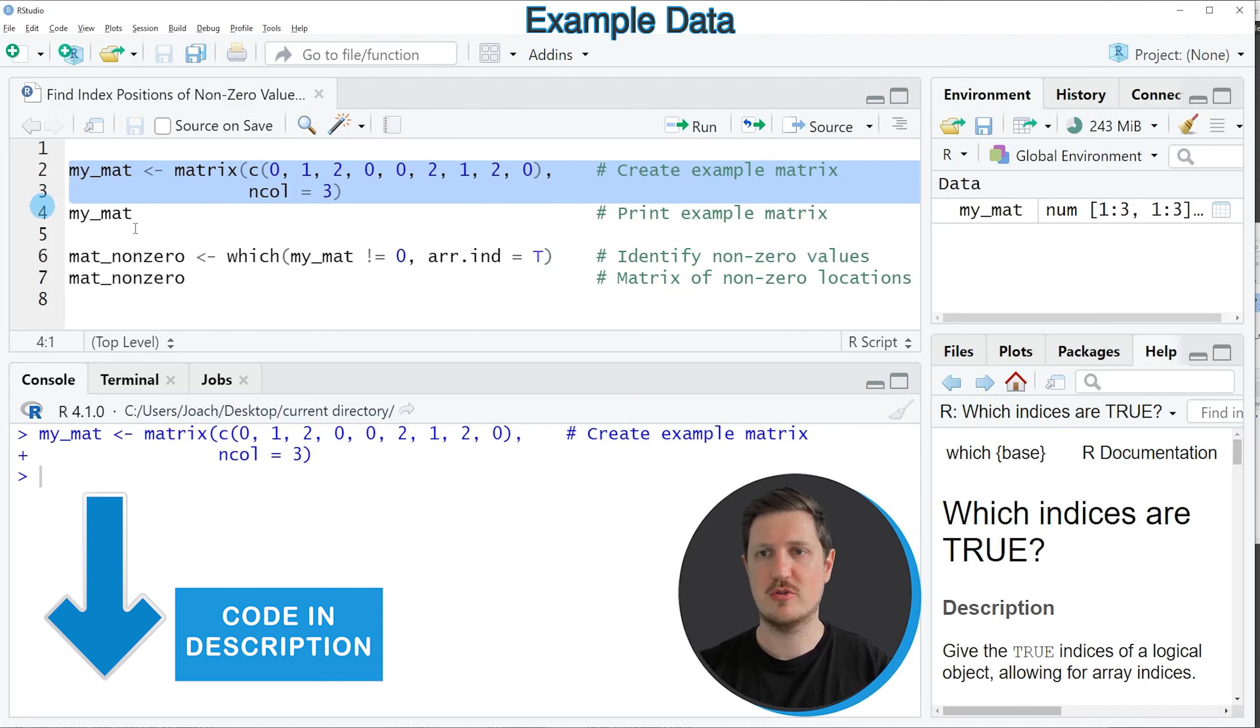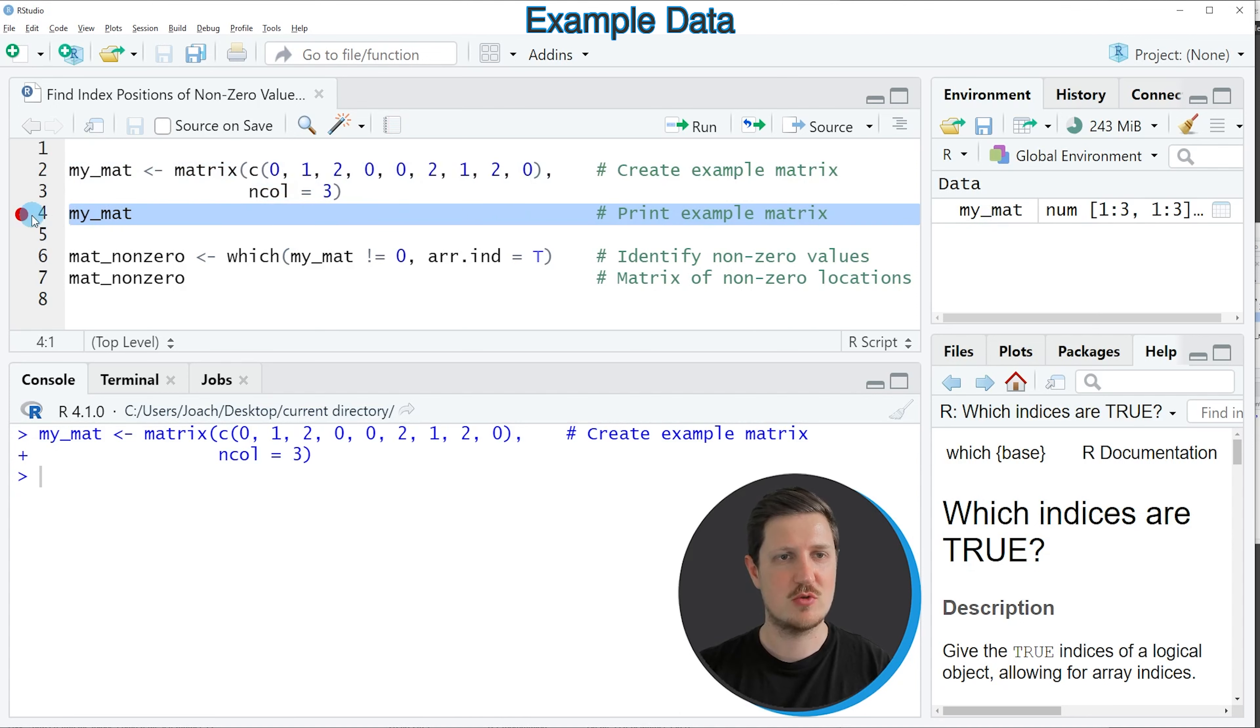So if you run these lines of code, you can see at the top right of RStudio that a new matrix object is appearing, which is called MyMet. And we can print this matrix to the RStudio console by running line 4 of the code.